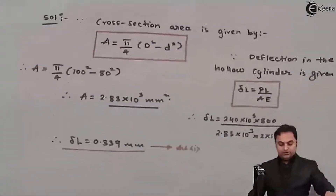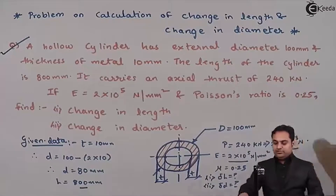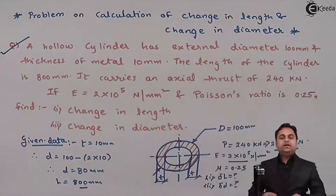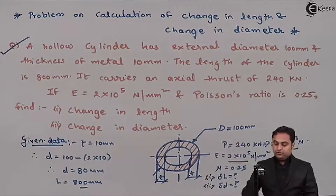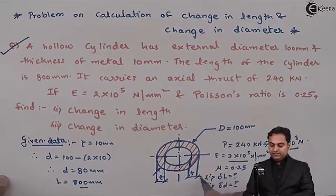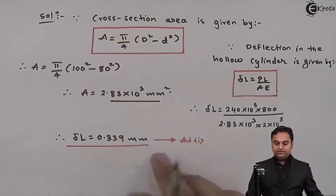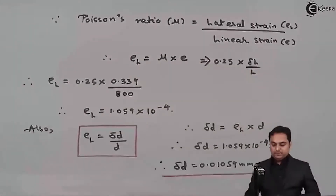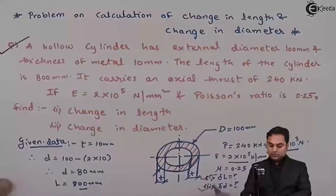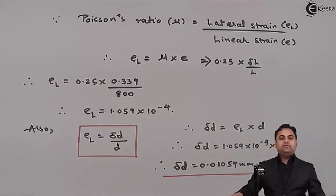So in this problem, with the hollow cylinder subjected to a load of 240 kN, we calculated the change in length as 0.339 mm and the change in diameter as 0.01059 mm. With both values found, the problem is completed.